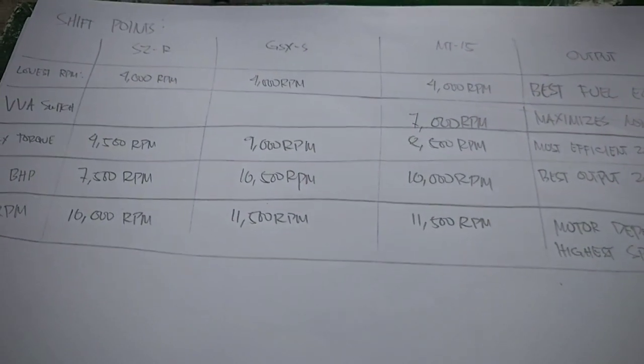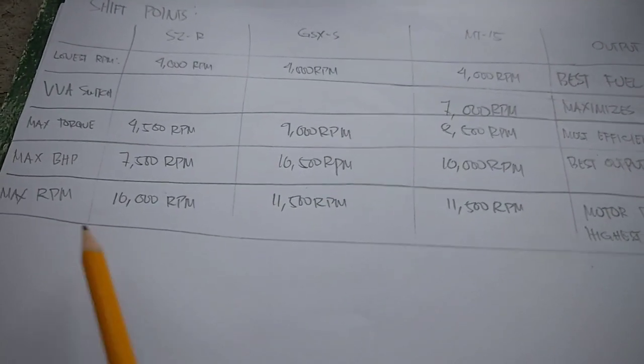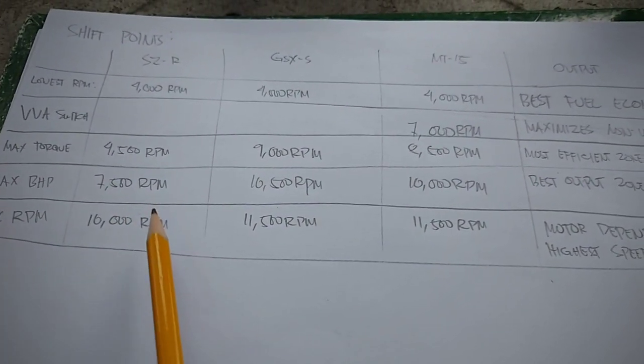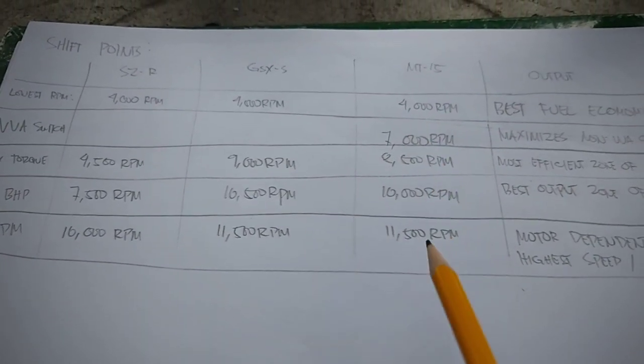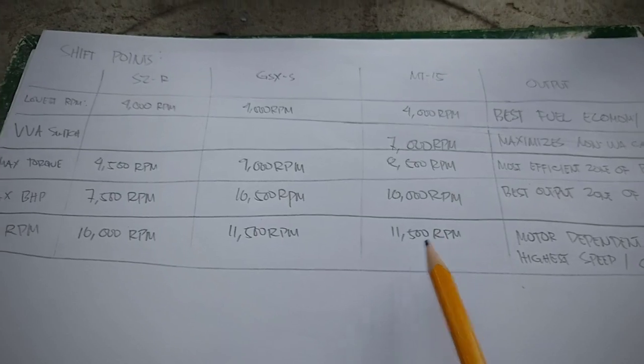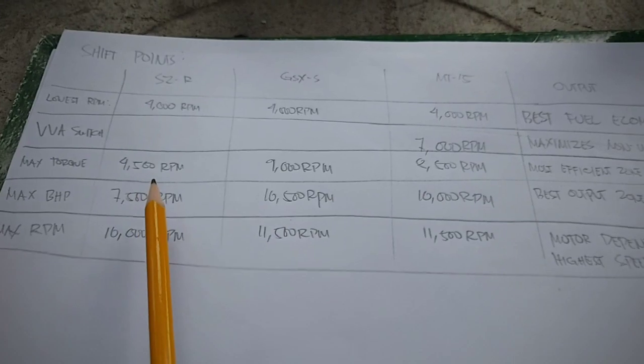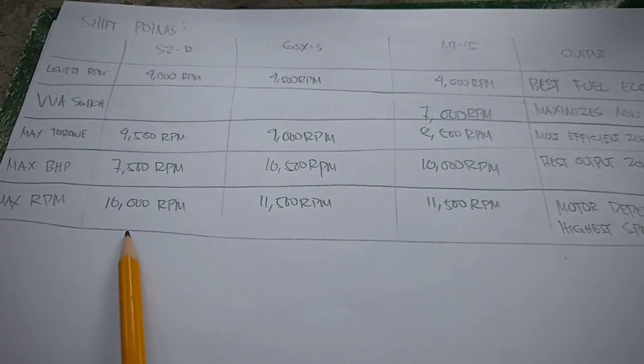Of course, meron tayo, favorite ng mga kamote, yung shifting point sa max RPM or the redline. So si SZ, 10,000 RPM yung redline niya, kay GSX 11.5K, kay MT-15 11.5K. So makikita natin dito sa tatlong motor na ito na si SZ, ang pinakamalayo ang maximum horsepower dun sa redline niya.